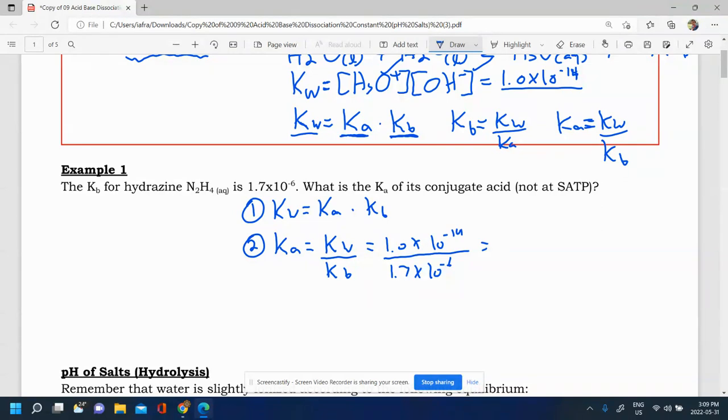And that'll give us, so 1 times 10 to the negative 14 divided by 1.7 times 10 to the power of negative 6. And we get about 5.88 times 10 to the power of negative 9. Or to 2 sig figs, about 5.9 times 10 to the power of negative 9. So we did our Kw divided by Kb to find the Ka to 2 sig figs.